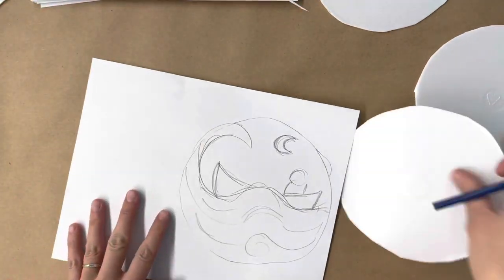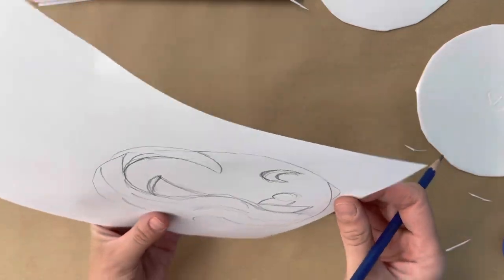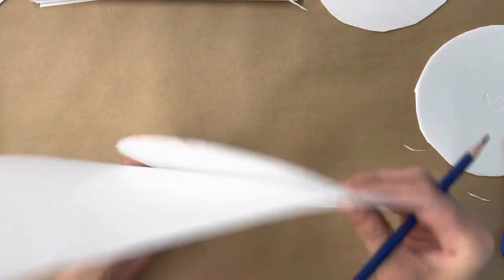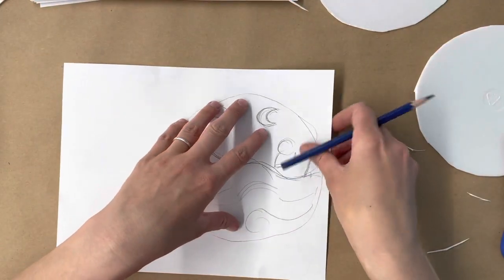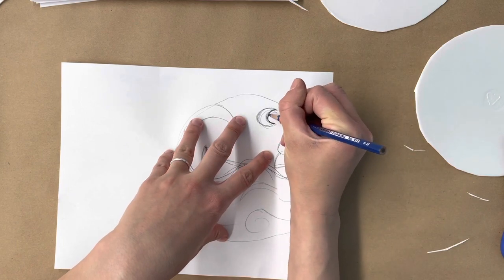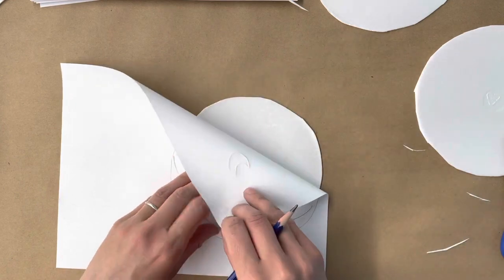Now I could just try to freehand redraw it onto my styrofoam, or I could try to line up my drawing with my styrofoam and trace it. As long as I don't move my plate around, it has to stay nice and still. I should be able to kind of press through if you press hard enough, and then lift up your paper.